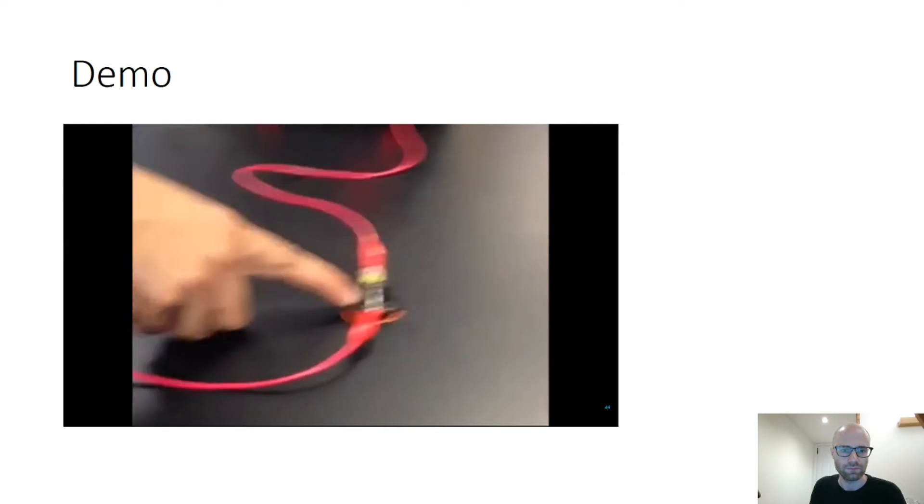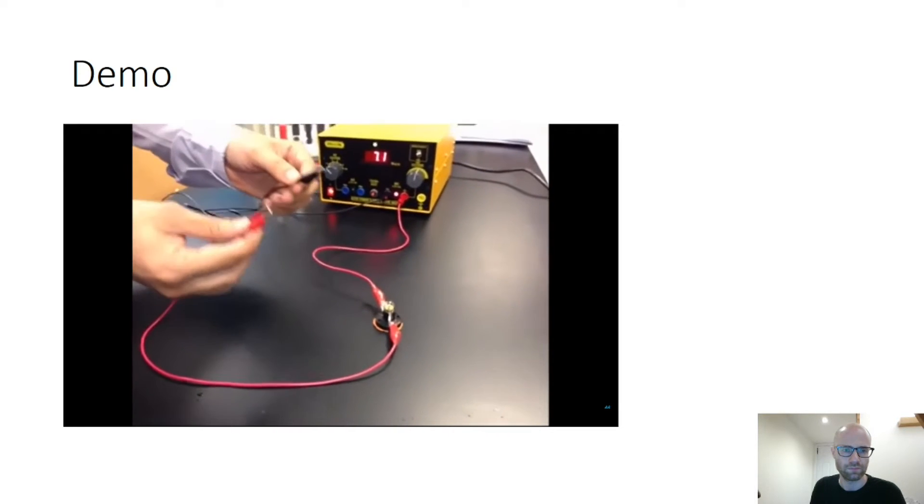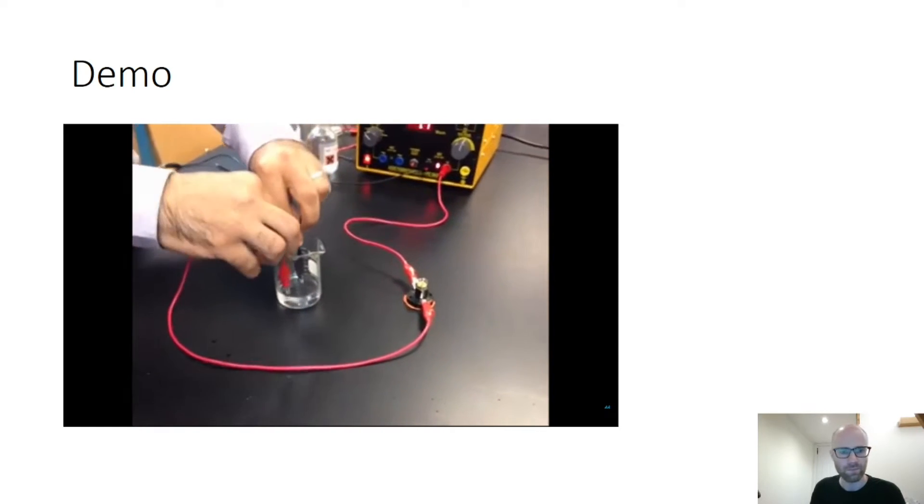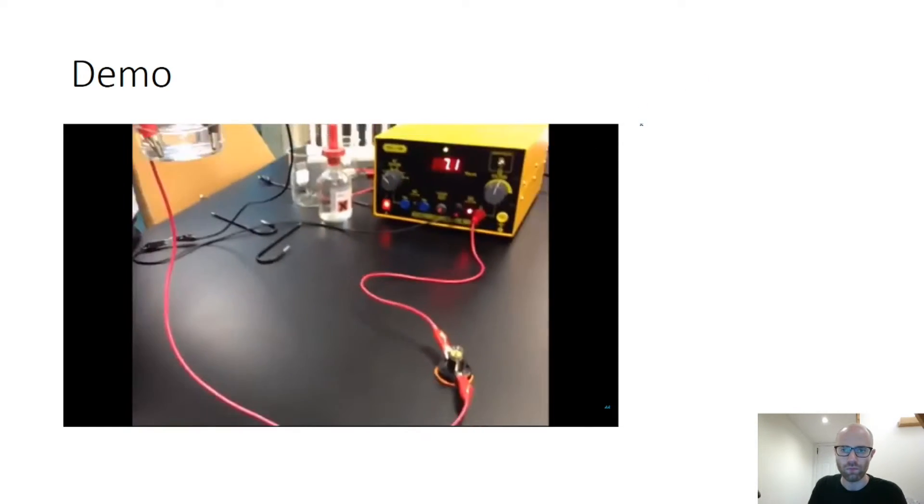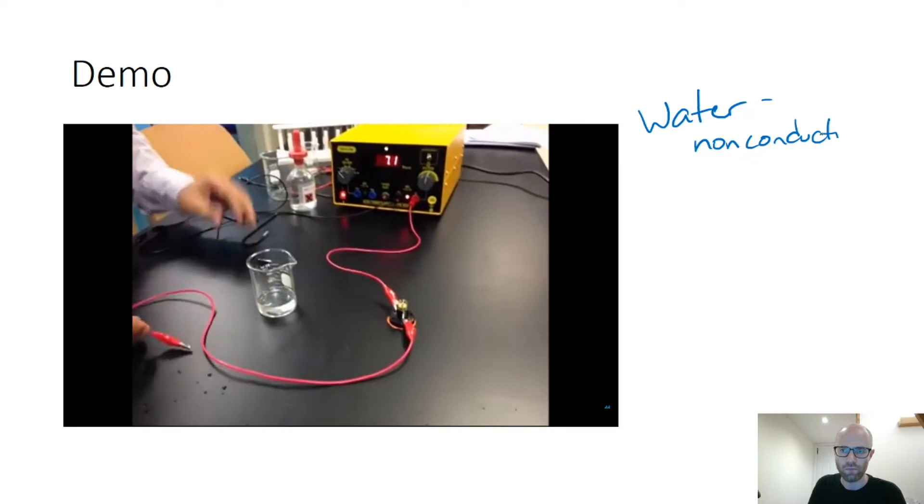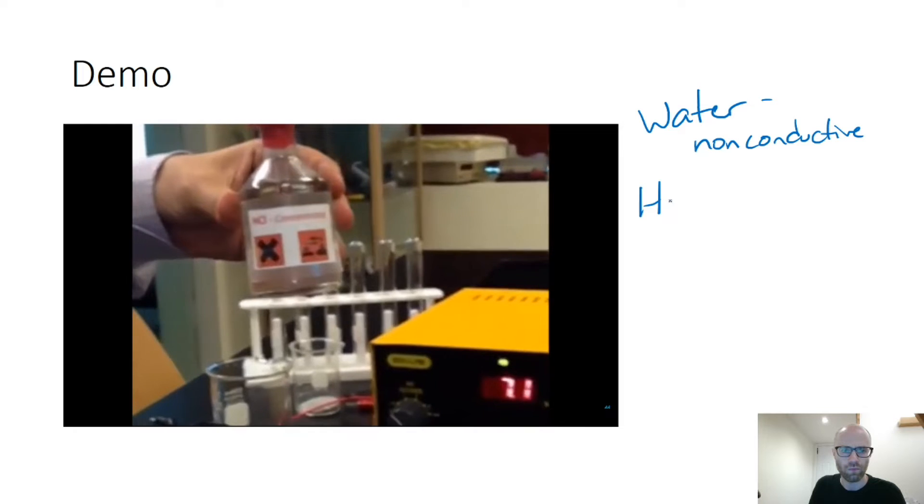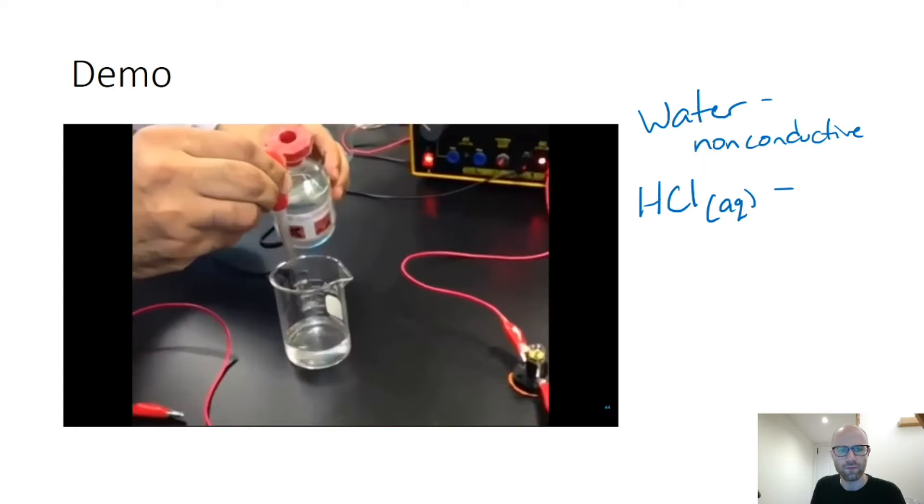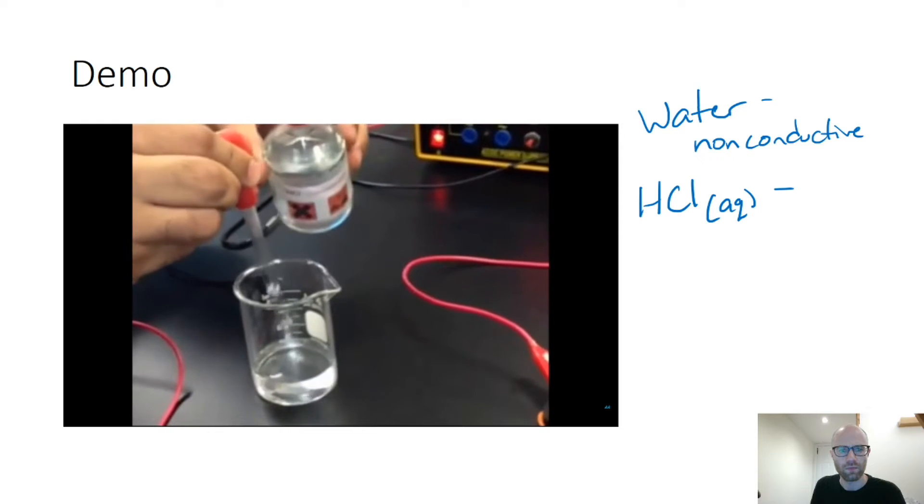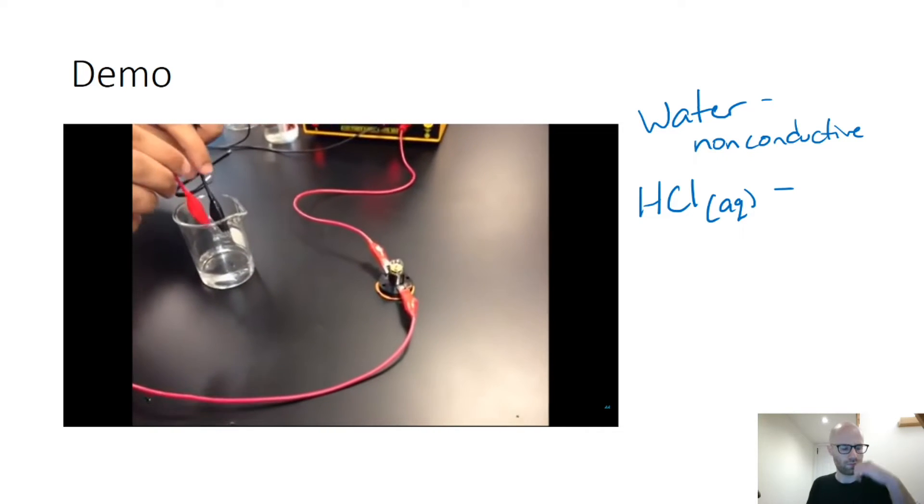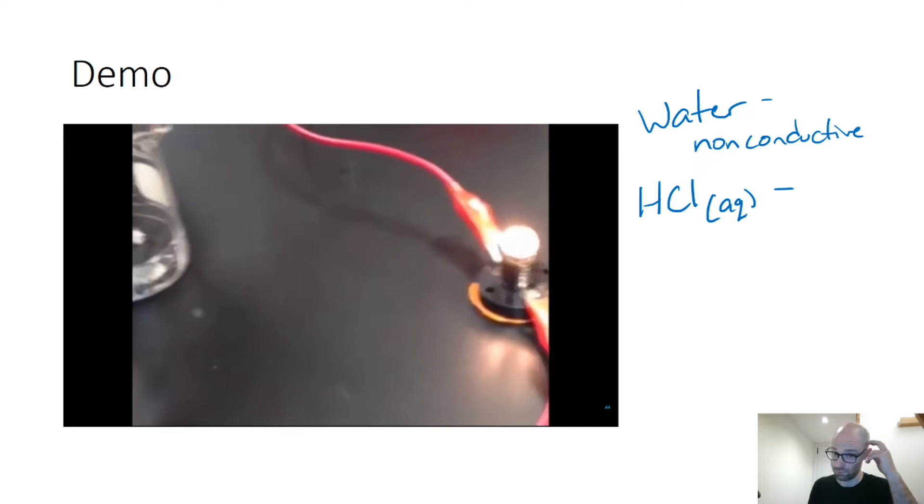Here we have a light bulb. I'm just going to show you that it's working. Now I'm going to dip these two electrodes in water to check if water conducts or not. As you can see, there's no light bulb. There's no light. Now I'm going to add some of concentrated HCl, hydrochloric acid. And I'm going to check again if it conducts or not. As you can see, the bulb is on.